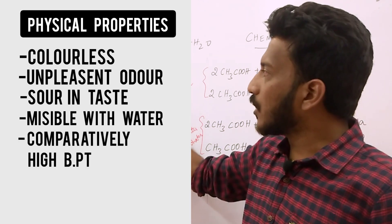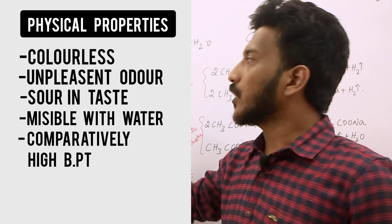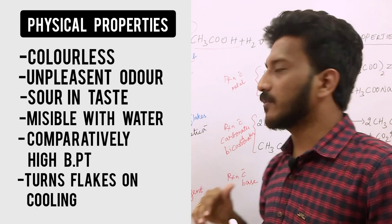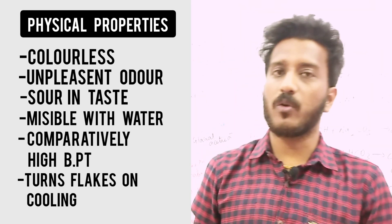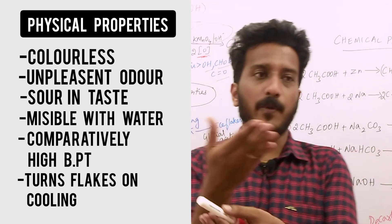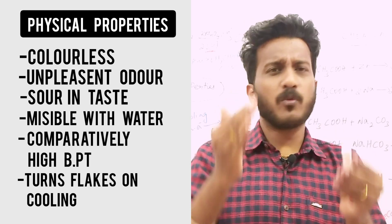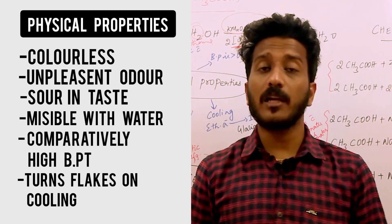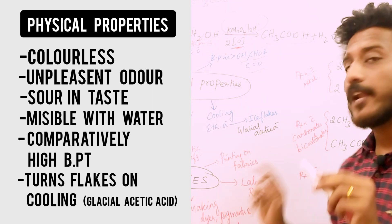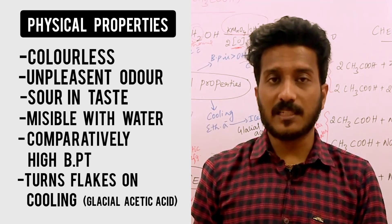Ethanoic Acid has a higher boiling point than alcohol, aldehyde, and ketone. When you cool Ethanoic Acid, it forms ice flakes — it deposits in the freezer as ice flakes. This is called Glacial Acetic Acid.